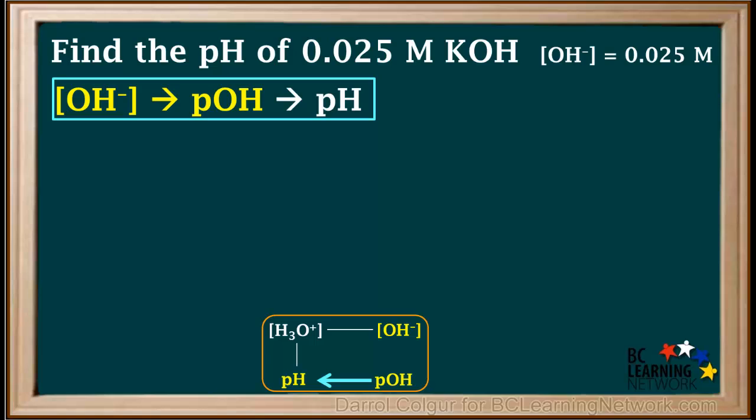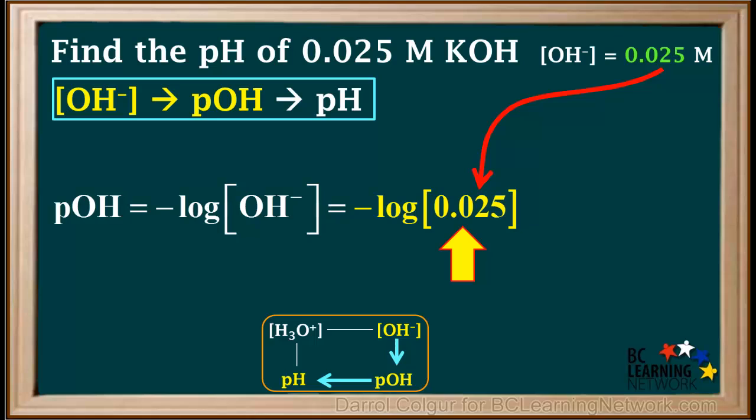We start by converting hydroxide ion concentration to pOH. pOH equals the negative log of the hydroxide ion concentration, which is the negative log of 0.025, which comes out to 1.602.